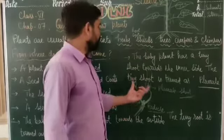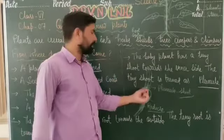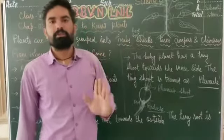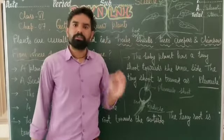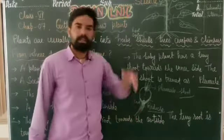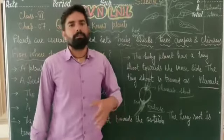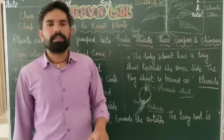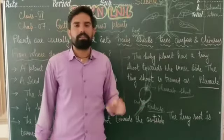लेकिन plants भी move करते हैं — पर उनमें जो movement होती है वो fixed movement होती है। जैसे stem move करता है — छोटा होता है फिर बड़ा हो जाता है, towards the sky और towards the sunlight। Roots भी ground के अंदर grow करती हैं — बड़ी-बड़ी roots होती हैं। लेकिन plant अपनी जगह से एक place से दूसरी place पर नहीं जाता।